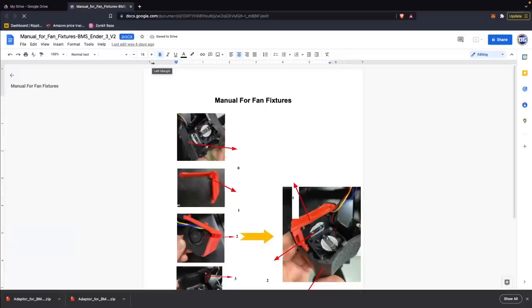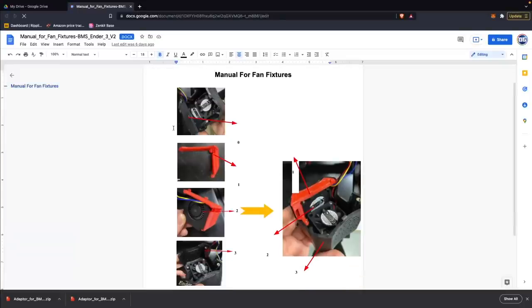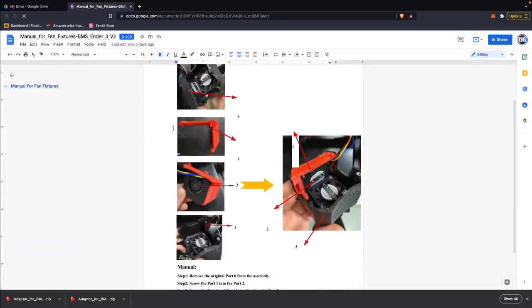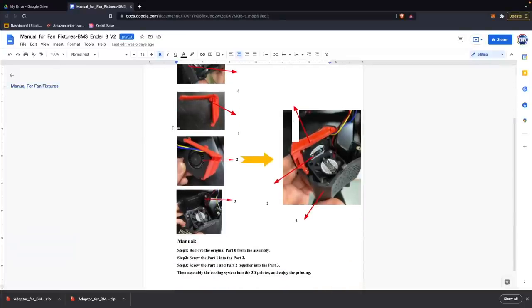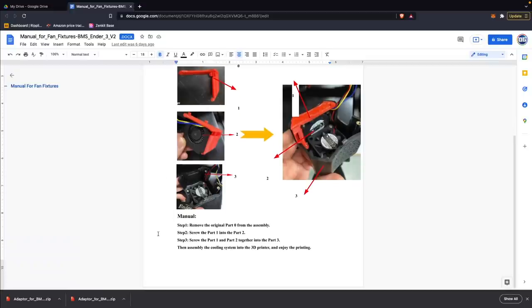There's a single page guide in the product page on 3djake on how to swap out the old shroud for the new one. It is not very good, and if you don't understand it don't worry because we will be covering it in this video.